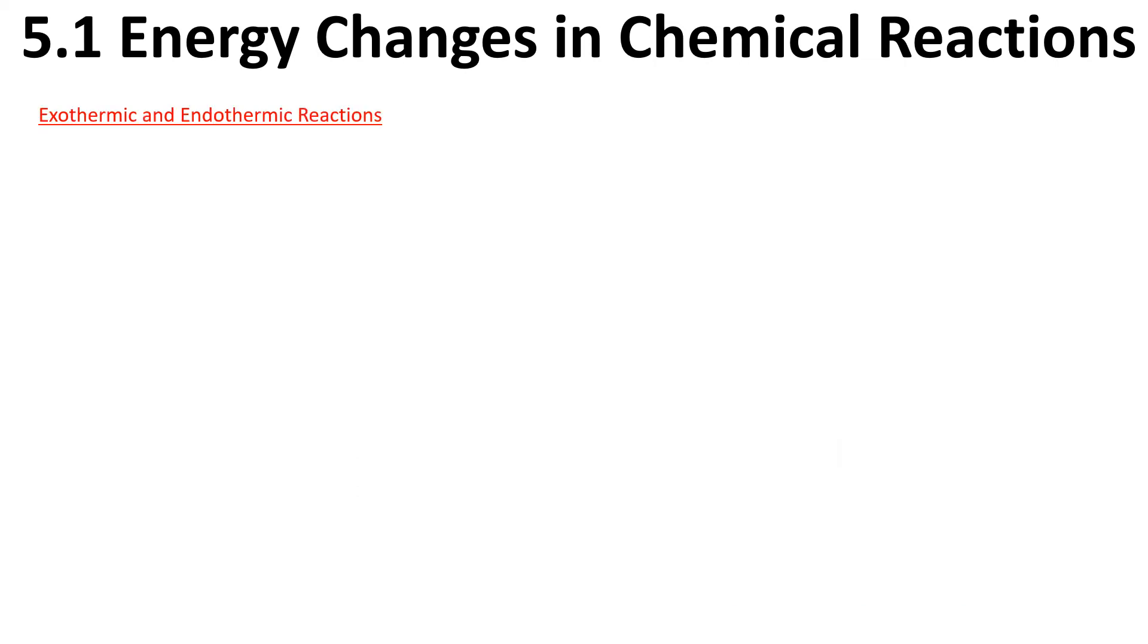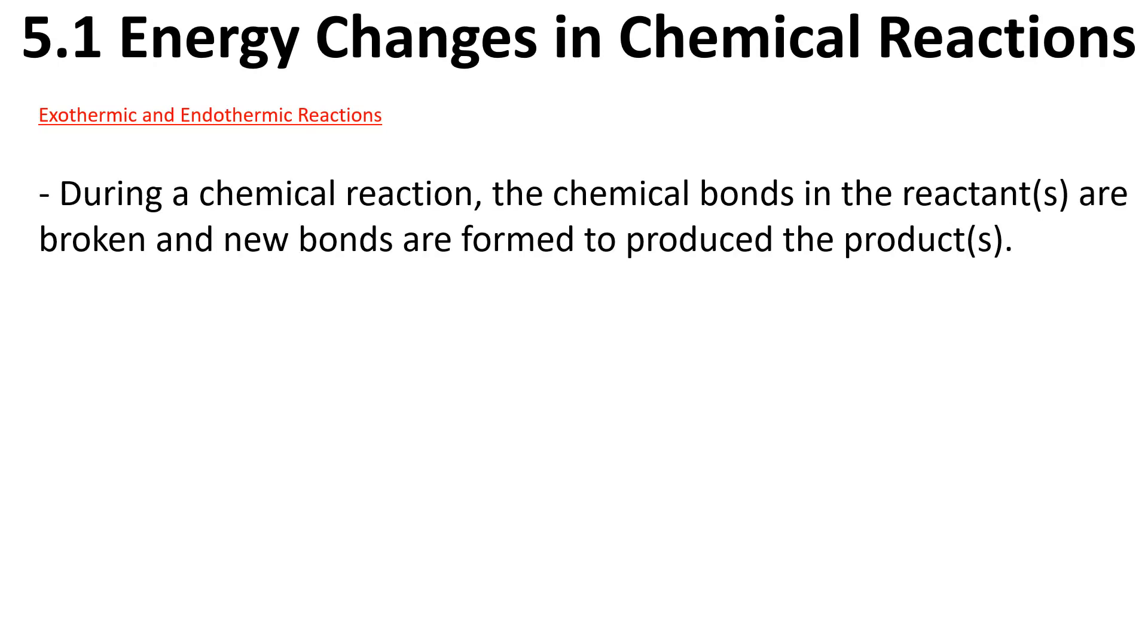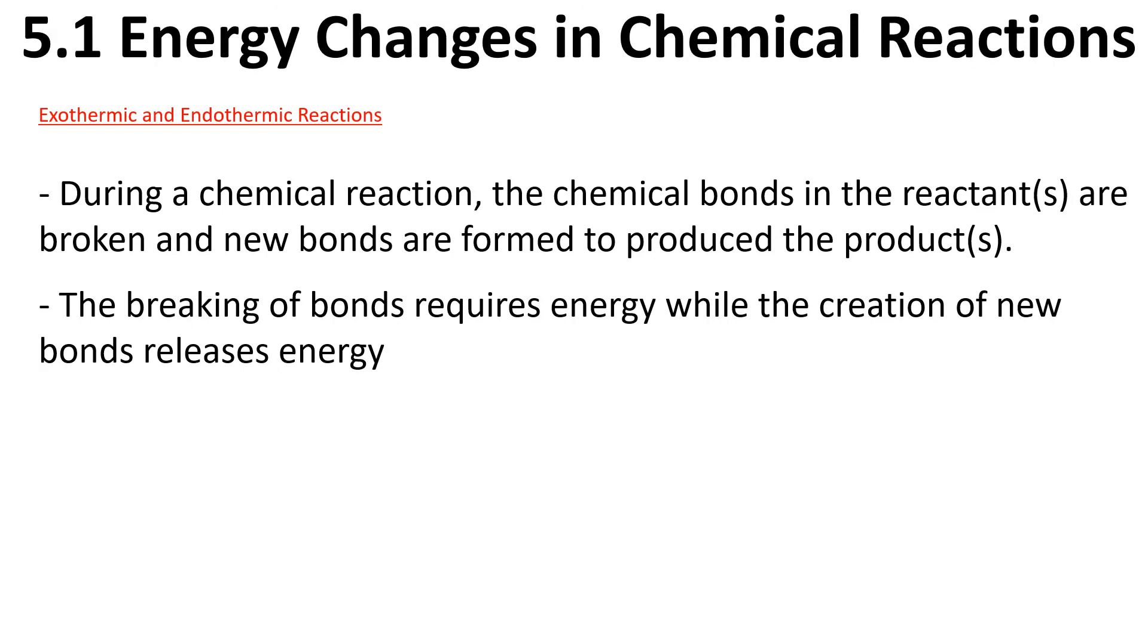Let's talk about exothermic and endothermic reactions. During a chemical reaction, the chemical bonds in the reactants are broken and new bonds are formed to produce the products. We have energy acting twice: to break the chemical bonds and then to reform to make new bonds. The breaking of bonds requires energy, while the creation of new bonds releases energy. If you picture breaking a molecule in half with your hands, that would take energy, and then putting it back together, some energy is released potentially.